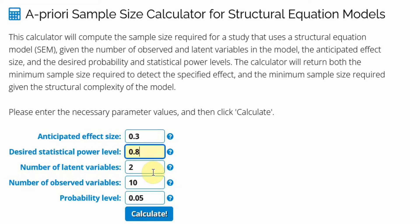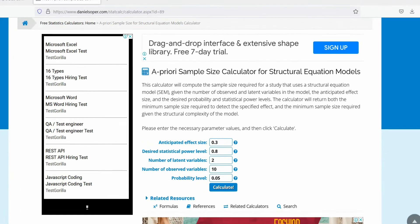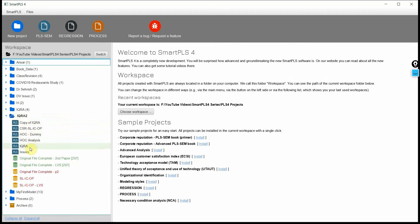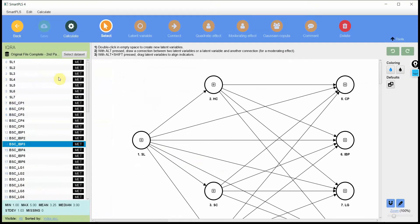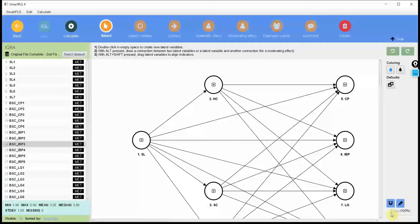So what are the number of latent variables? So what do we mean by latent variables? Let's have a quick look here. Let's say I've got this model here and want to calculate the sample size for this particular model here. So how many latent variables do I have?